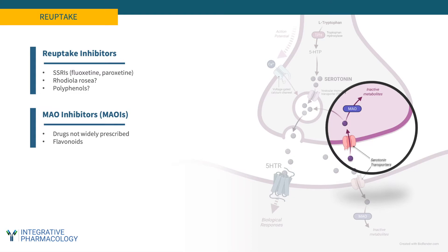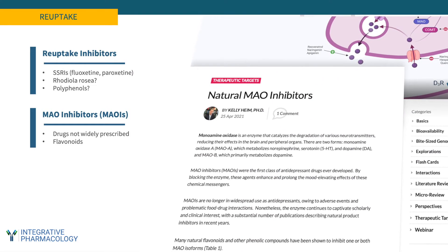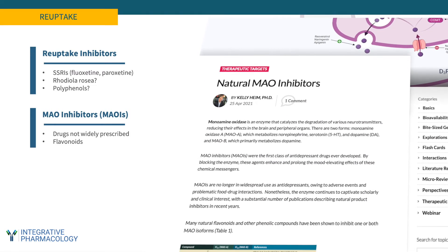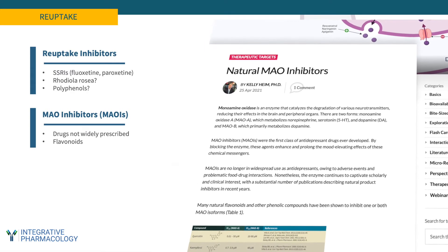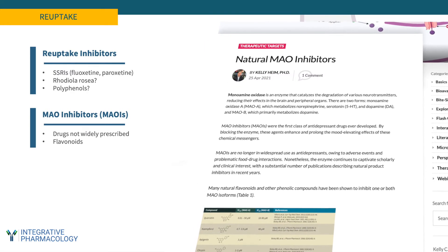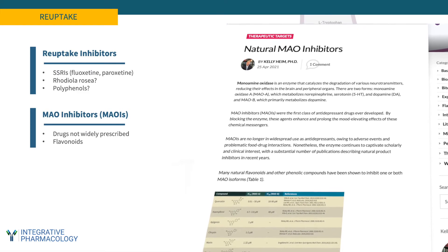MAO inhibitors are an old class of antidepressants that are no longer in widespread use. But as I mentioned in a recent article, MAO inhibitors do exist in the plant kingdom. They're not nearly as strong as the drugs, but they do appear to affect MAO function.